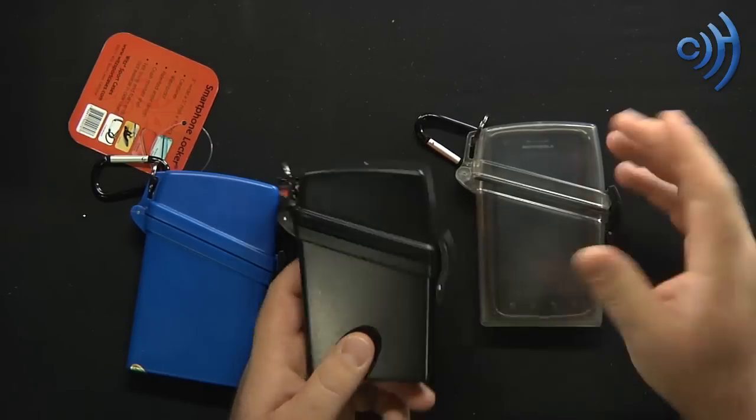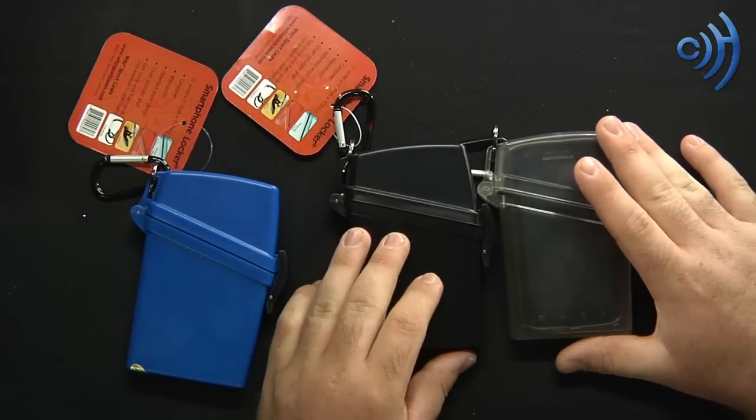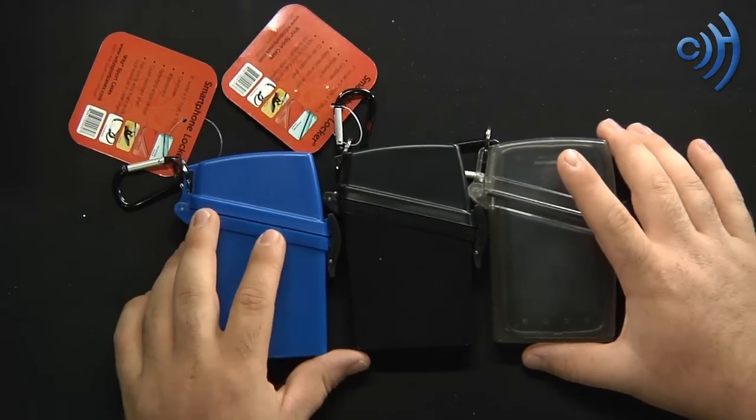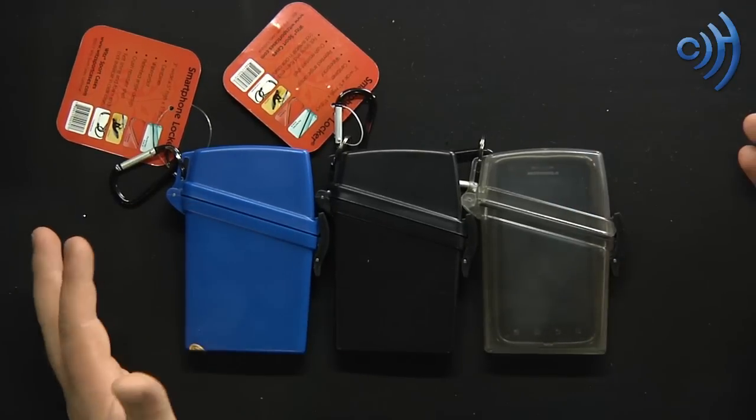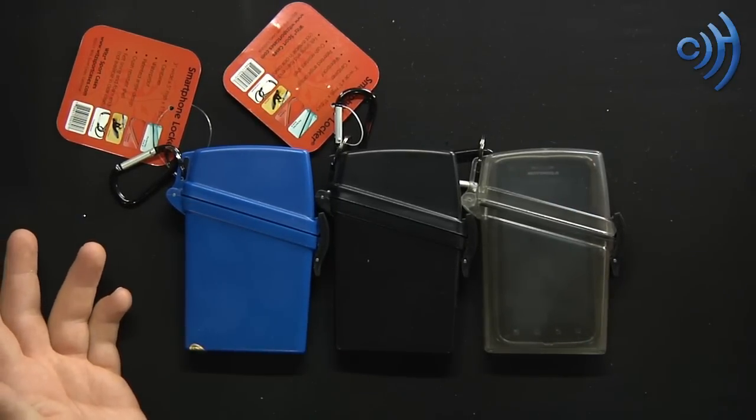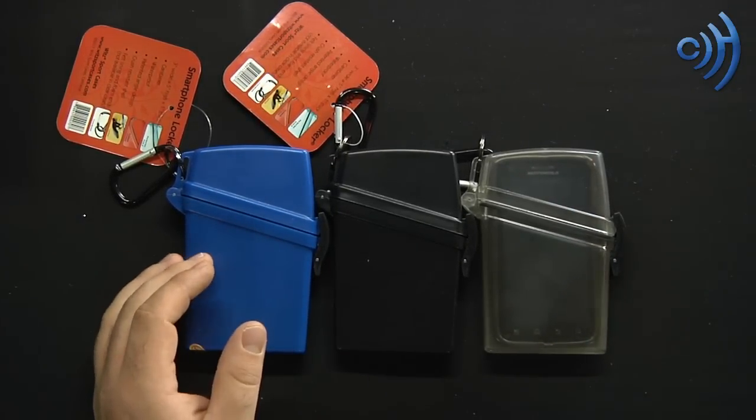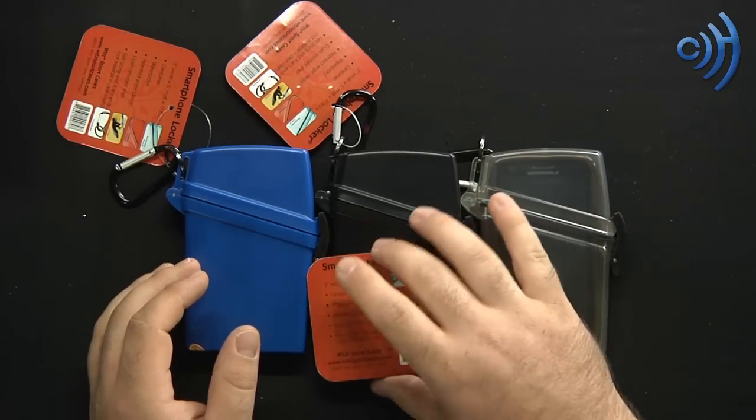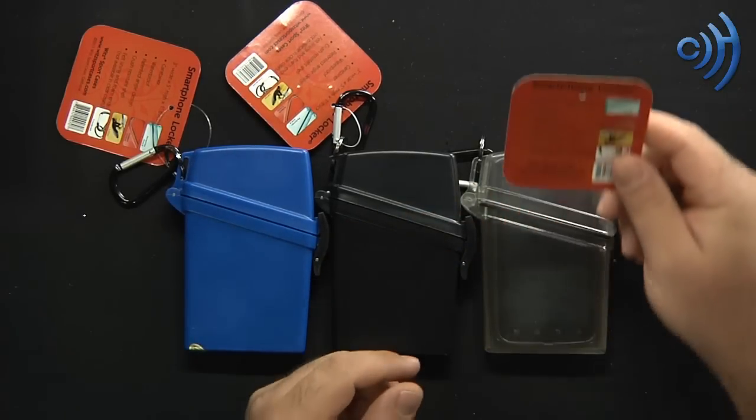It comes in a bunch of different colors, which sent us black, blue, and clear. And I don't know what we're going to do with these. Do you guys think we should do a free giveaway on these? I don't know. What do you guys think? Tell me in the comments and tell me on Facebook, facebook.com backslash cell phone track.